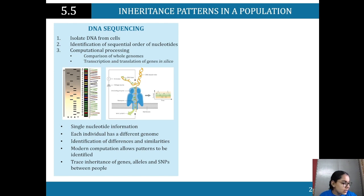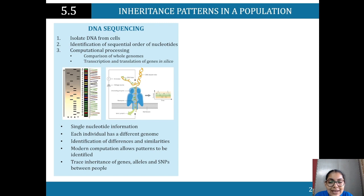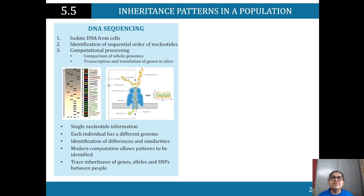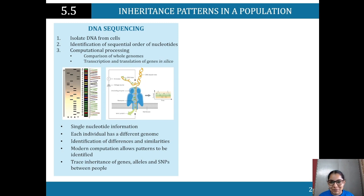For DNA sequencing, first we isolate DNA from the cells — remember DNA is in all of your cells. Second, we identify the sequential order of nucleotides; we need the specific nucleotides that code for a certain trait. This is helpful even in crime scenarios, where an investigator takes a hair sample from a crime scene, puts it in the lab, finds the DNA, and uses that to identify a person.